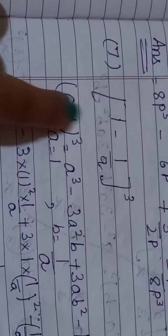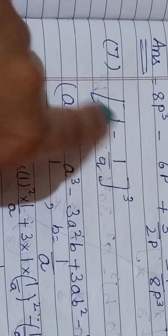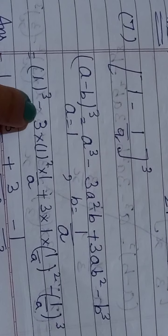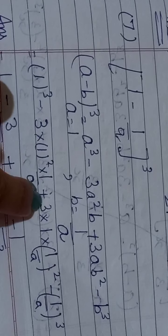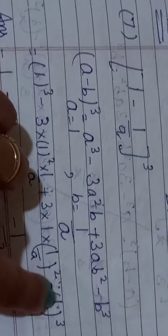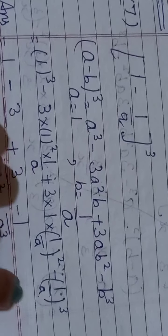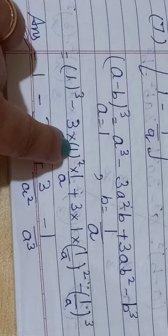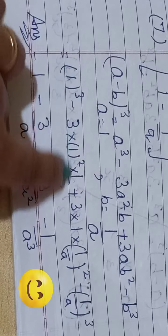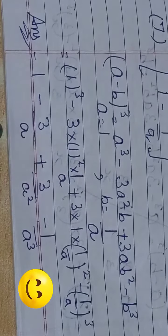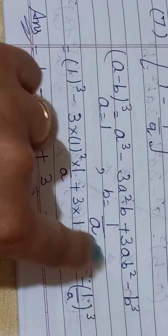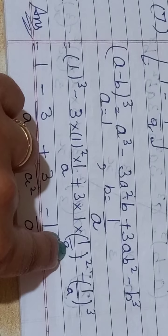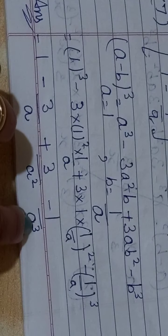Next: (1 minus 1 upon a) whole cube. Write the formula; a is equal to 1 and b is equal to 1 by a. So: 1 cube minus 3 into 1 squared multiply 1 upon a, plus 3 into 1 into (1 upon a) squared, minus (1 upon a) cube. This gives: 1 minus 3 upon a, plus 3 upon a squared, minus 1 upon a cube. So this is the answer.